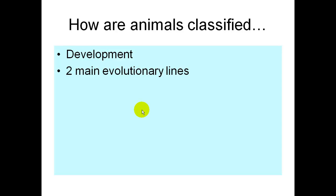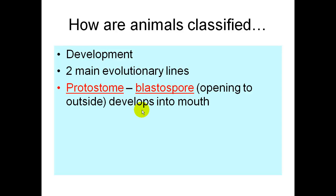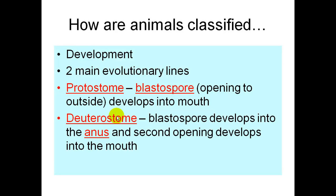Animals are also classified on development. There are two main evolutionary lines. The protostome is when the blastopore, which is an opening to the outside, develops into the mouth. Or the deuterostome, where that blastopore is going to develop into the anus first, and then a second opening will arise that develops into the mouth.